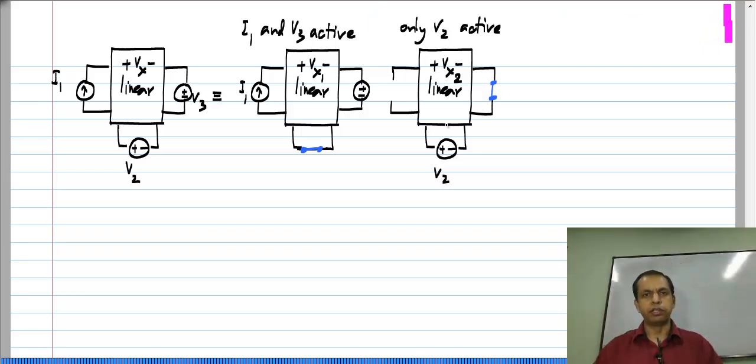Now, the very minor extension I mentioned is this. I do not have to take one independent source at a time. I could take multiple sources. For instance, here I think of this case as a superposition of two cases, one in which I_1 and V_3 are active and the other one in which only V_2 is active. So, the only thing I have to ensure is that over all the cases I consider, first of all I take all the sources, all of them must be occurring once and exactly once I should not be double counting any of them either.